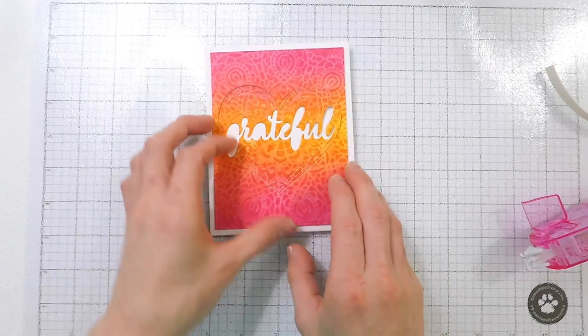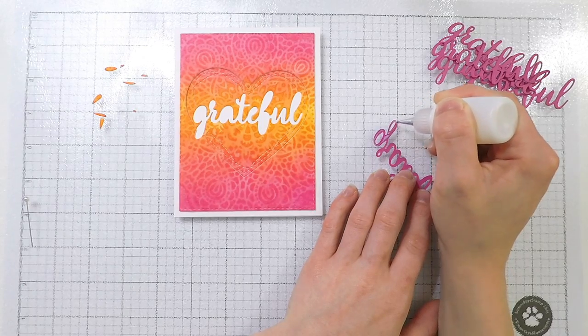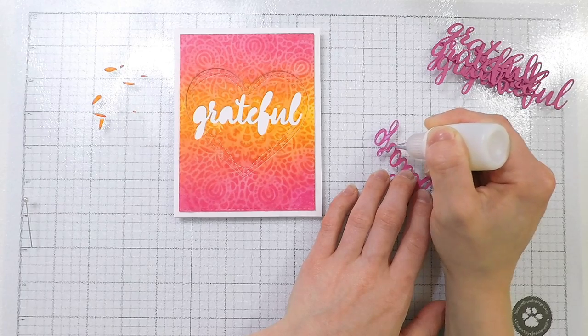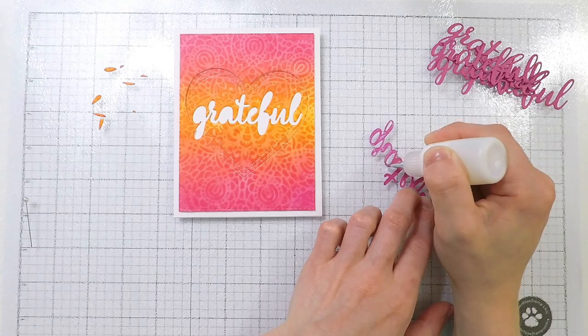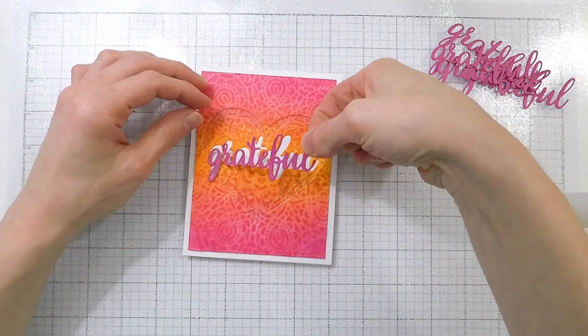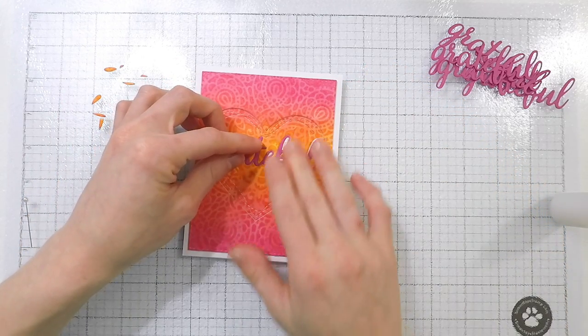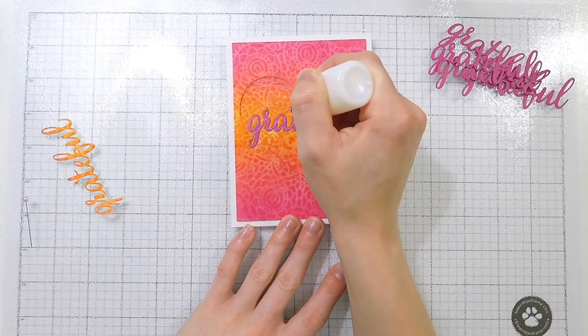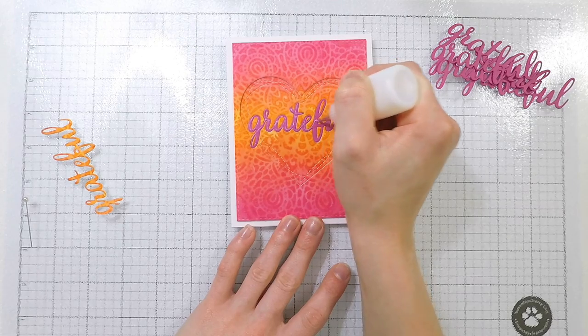After I've adhered that heart onto my card, I'm going to also bring in another set of grateful words. These I die cut from some pink cardstock that I thought matched the pink in my ink blending really nicely. I cut these about five times from that pink cardstock and I'm going to lay them into my negative areas so that way I can fill in that grateful negative area and create the inlay effect. I also added in all of those little negative pieces that go in between the word grateful using some liquid glue.